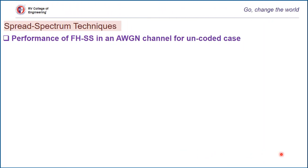This is a video in the Communication Systems 2 course. In the last video we analyzed the performance of direct sequence spread spectrum technique in terms of jamming margin, coding gain, and processing gain. This video deals with the performance of the second flavor of spread spectrum technique: frequency hopped spread spectrum (FHSS).